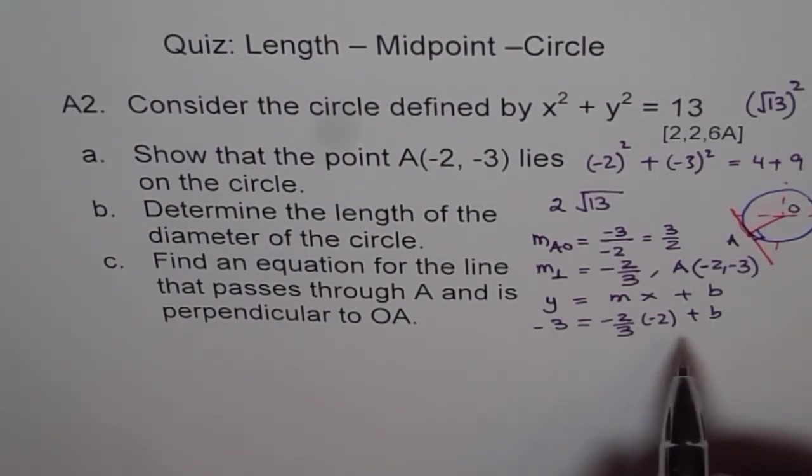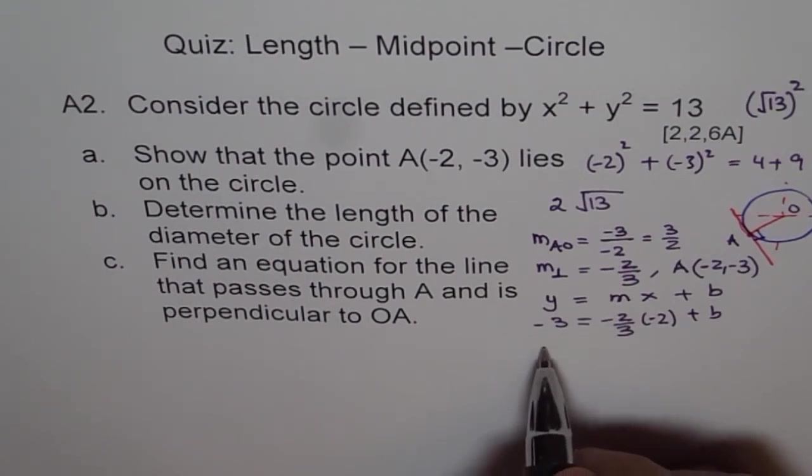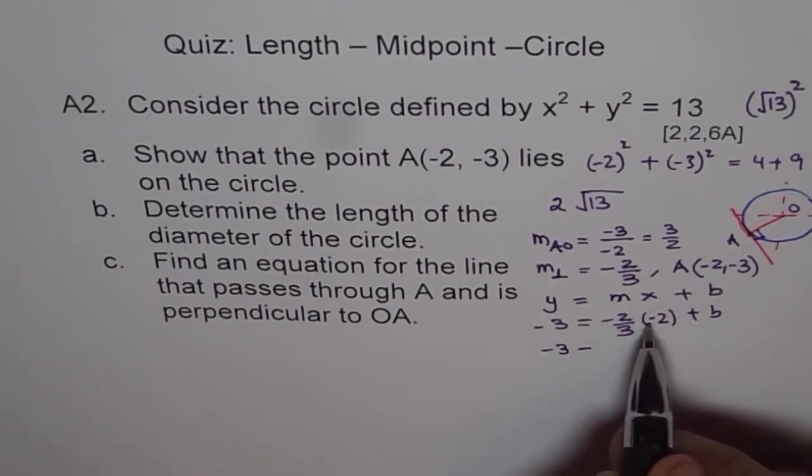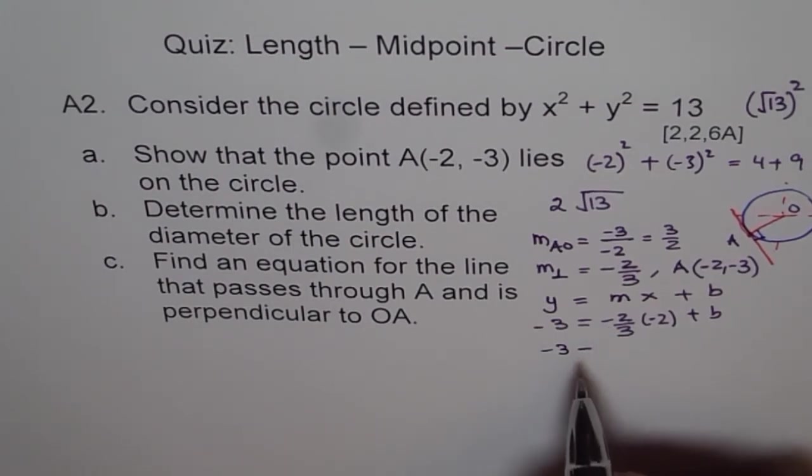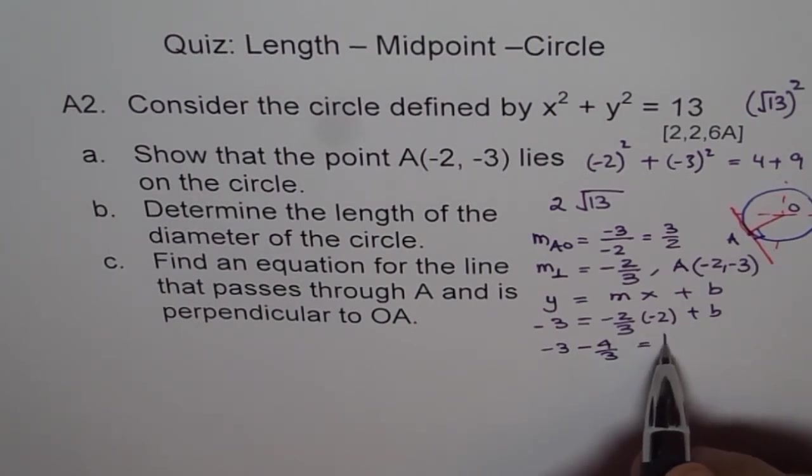So b is equals to, we'll bring this term on that side. So you get minus 3, and this plus, this will be plus when you multiply. When you bring it here, it becomes minus again, right?